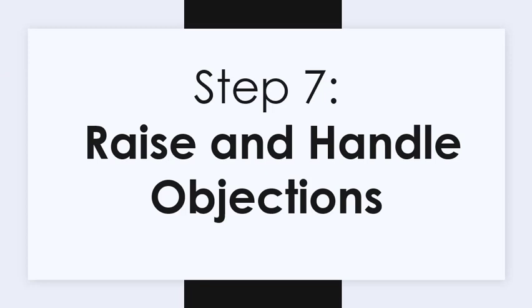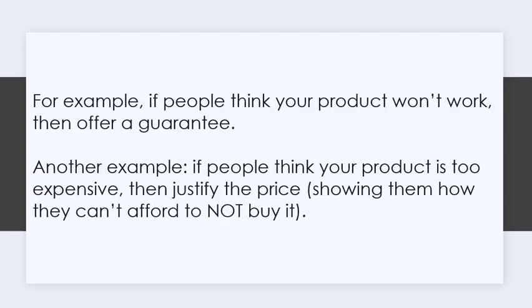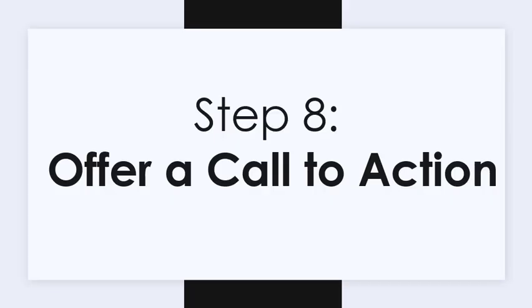Step 7: Raise and handle objections. Your next step is to raise the objections people have to buying your product and then handle them. For example, if people think your product won't work, then offer a guarantee. Another example: if people think your product is too expensive, then justify the price, showing them how they can't afford to not buy it.